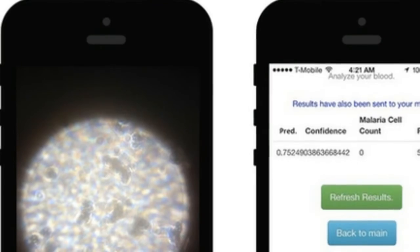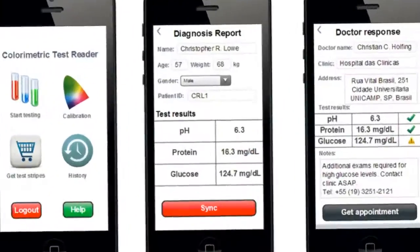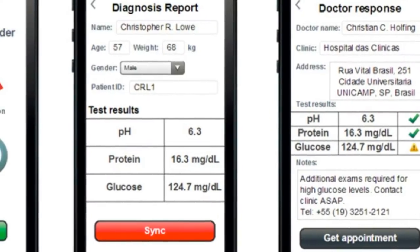Users take a picture of their blood using the lens attachment, which is then sent to the app servers, and the results are then sent back to them.